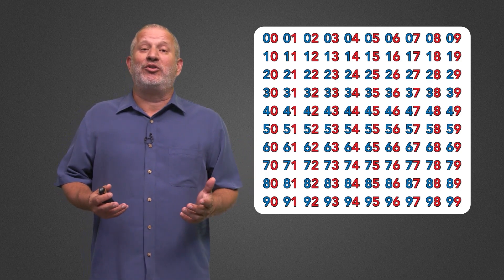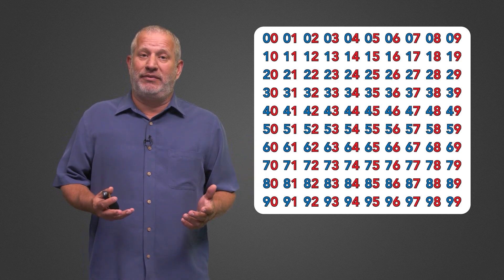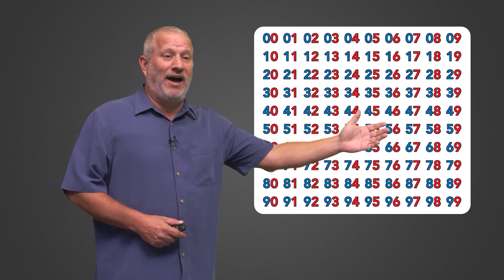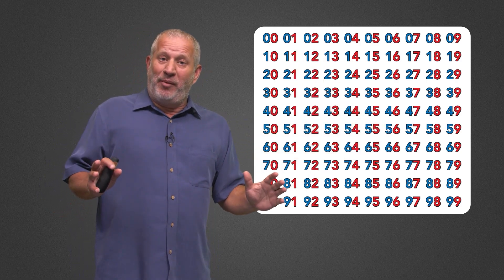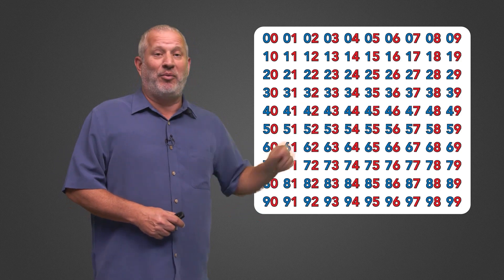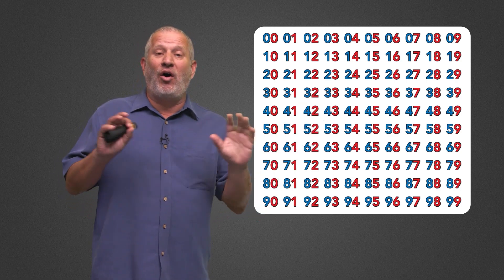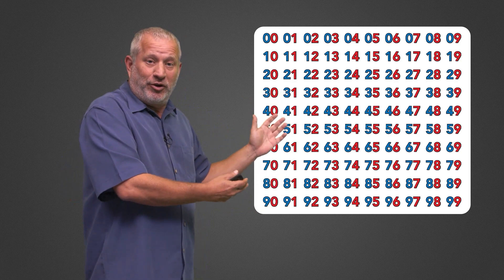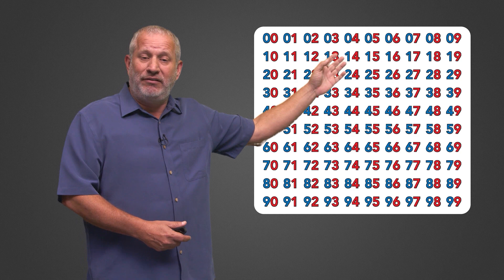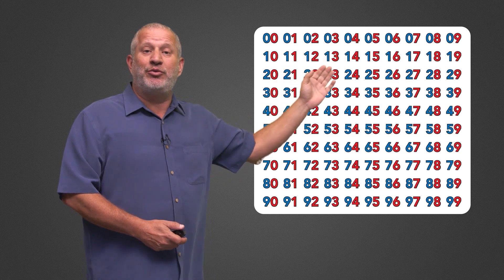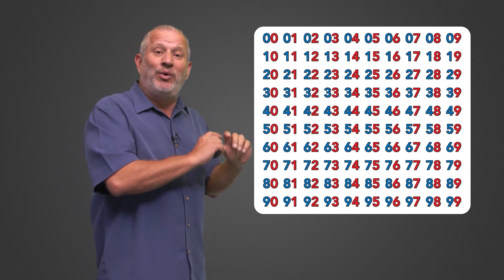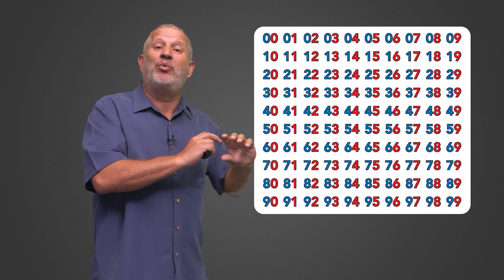We're used to a number grid that goes from 1 through 100, but this number grid goes from 0 to 99 — 100 numbers — and everything changes when you start with 00. It changes all the symmetry in this picture. When you have the 1 through 100 number grid, it goes 1 through 10, 11 through 20, 21 through 30, and so on. There's no continuity, with each 10s being on its own row.